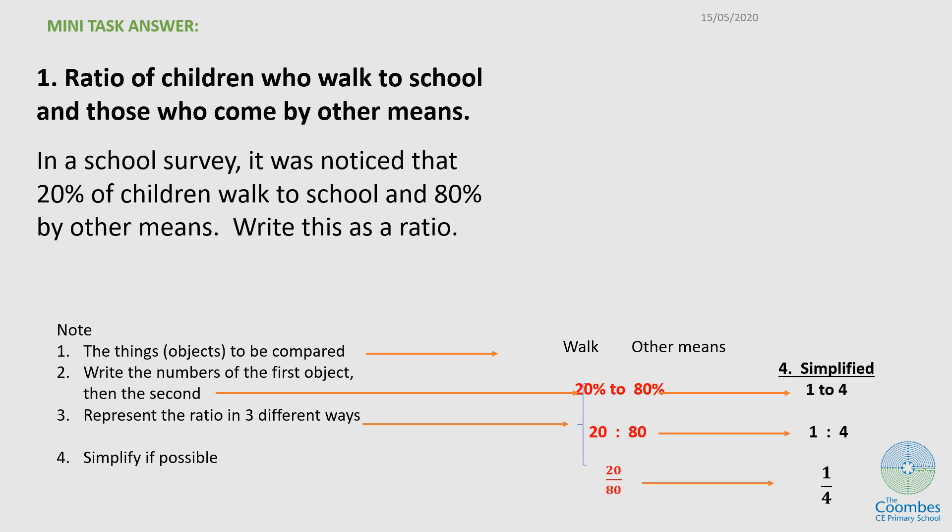If we follow our steps, the things to be compared are children walking to school and then other means. From the question, the walk to school was first, so I write that number first: 20% walk to school to 80% by other means. I can write it in my three different ways here, and I can simplify. I know that there are four lots of 20 in 80, so I can write it as a quarter. I can rewrite my simplified version as one to four, one colon four, or one over four.